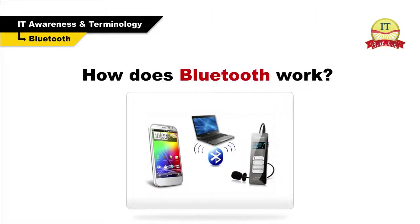Bluetooth works using wave radio technology through the 2.4 to 2.485 GHz transmission band. A Bluetooth device contains a small computer chip enabling the user to connect to other devices within a personal area network of 30 to 50 meters.